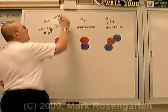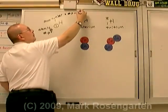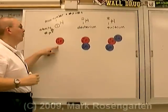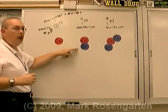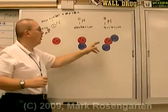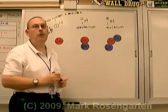The mass number is equal to the number of protons plus the number of neutrons. One proton, mass of one. One proton, one neutron, mass of two. One proton, two neutrons adds up to a combined mass of three.